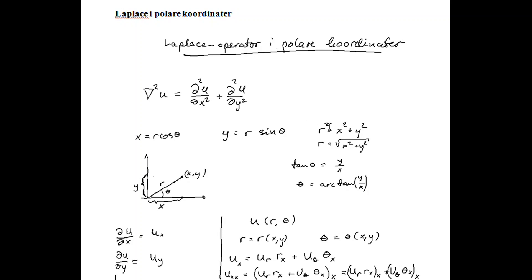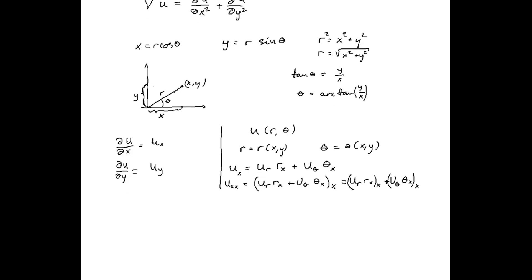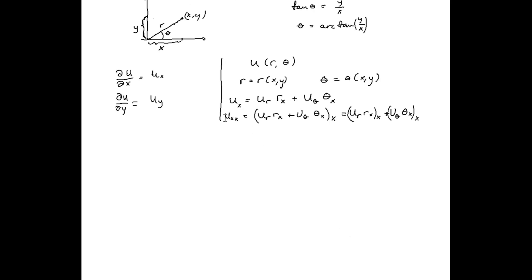By the Pythagorean theorem, the square of r is equal to the sum of the square of x and the square of y, giving us an expression for r. Moreover, the tangent of theta is equal to y over x. Using the chain rule two times, we are able to find the partial derivative of u twice — that is, the second derivative of u with respect to x.